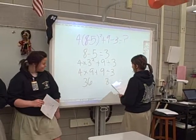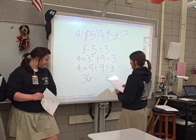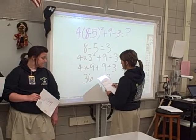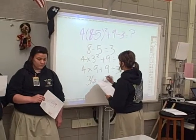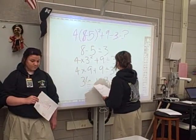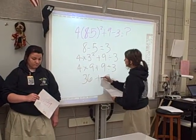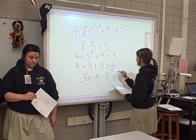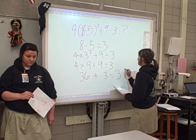Step four, you add and subtract. In this case, all we're doing is adding thirty-six plus three, which equals thirty-nine.